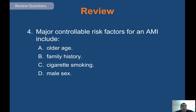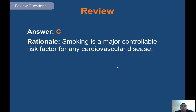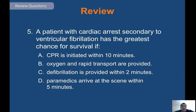Major controllable risk factors for an AMI include things you can change. We can't control being male, getting older, or our family history. But we can stop smoking cigarettes. Smoking is a major controllable risk factor for any cardiovascular disease.